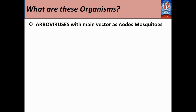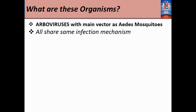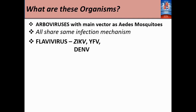They are arboviruses, meaning that they are transmitted by mosquitoes, and the main vector that transmits these viruses is the Aedes mosquito. They all share the same infection mechanism. For some of these viruses, they belong to the virus family called Flaviviridae — the Zika virus, yellow fever virus, and the dengue virus are Flaviviruses — but the chikungunya virus is an alphavirus belonging to the virus family Alphaviridae.